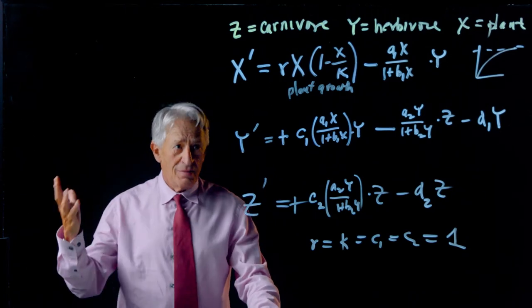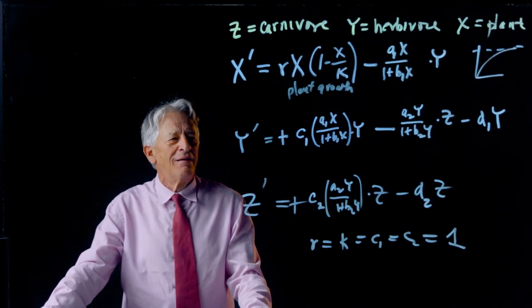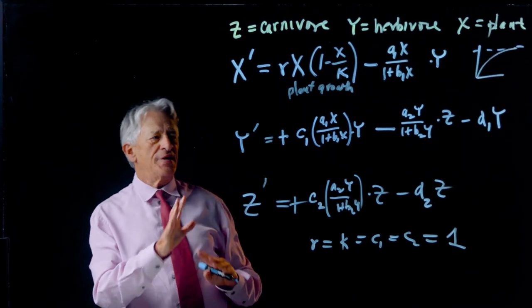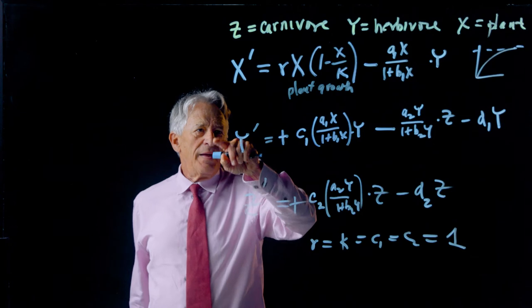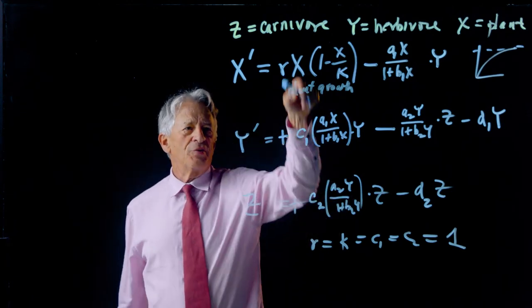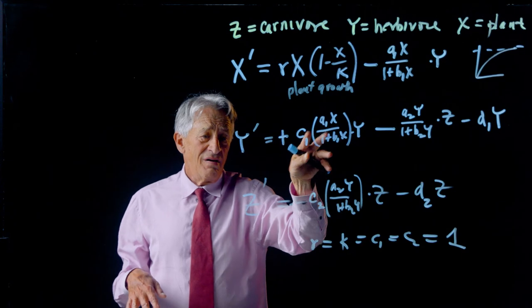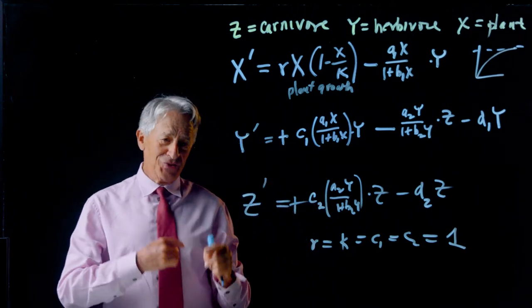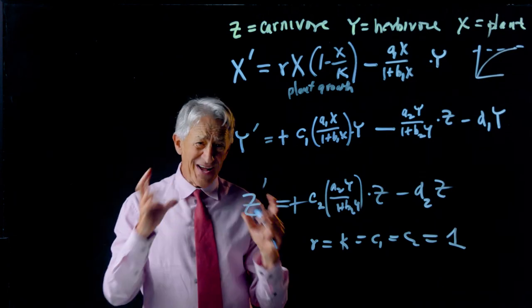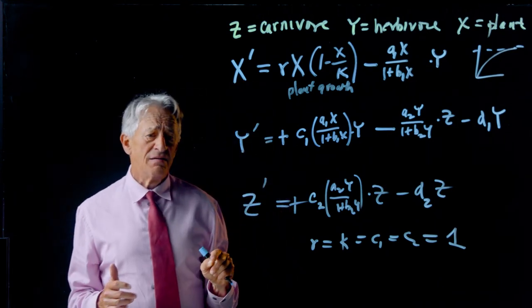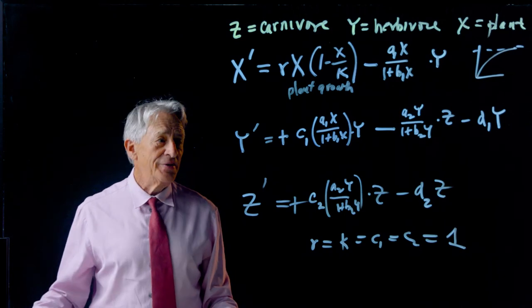So the next question is, what behavior follows from this model? And the answer is very interesting. First of all, you can sort of see, beginning to see the outline just by staring at the equations, X and Y are in a sort of a Holling-Tanner two variable oscillation with each other. And then Y and Z are in another two variable Holling-Tanner oscillation with each other. So we have two oscillators, the XY oscillator and the YZ oscillator. And they're operating on each other. And the result is going to be interesting.